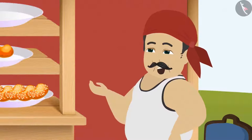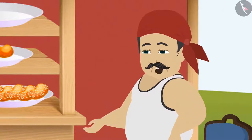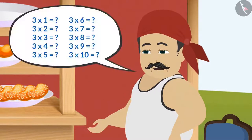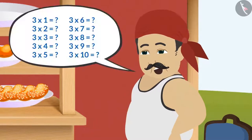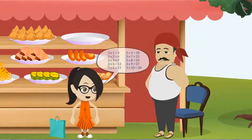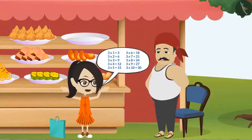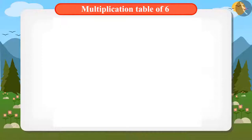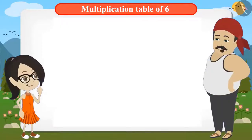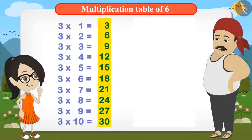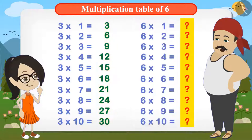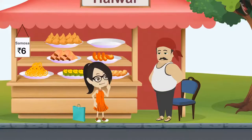Chaggu says: "So what? Do you know the multiplication table of three?" Vandana replies: "Yes, I know the multiplication table of three." Chaggu explains: "Then you can easily find out the multiplication table of six from the multiplication table of three."